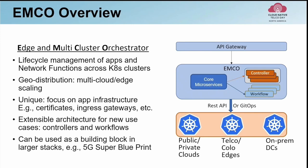EMCO is unique among app orchestrators in that it can not only deploy apps as Helm charts, but also automate the configuration of the environment around the application. For example, if the Kubernetes cluster has an Ingress gateway, it may need to be provisioned with the HTTP routes for the application. Also, the enterprise deploying the app may have its own certificate authority. If so, an intermediate CA has to be set up for the cluster and certificates for MTLS and other needs need to be derived from that. EMCO automates all these scenarios.